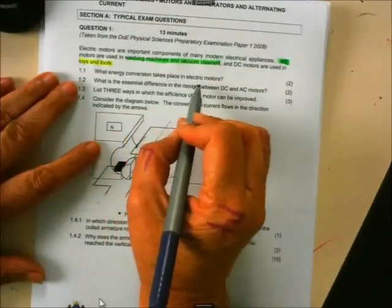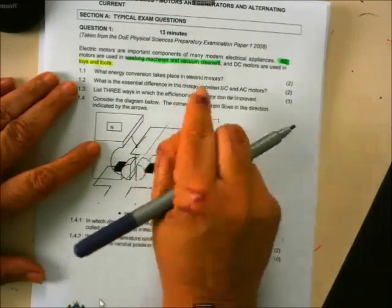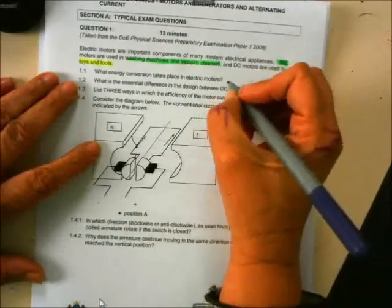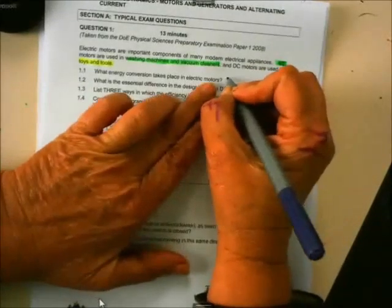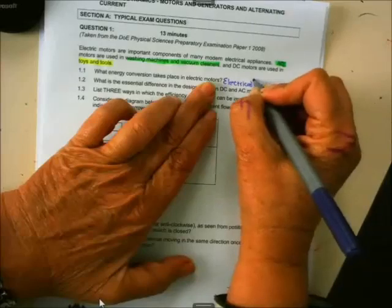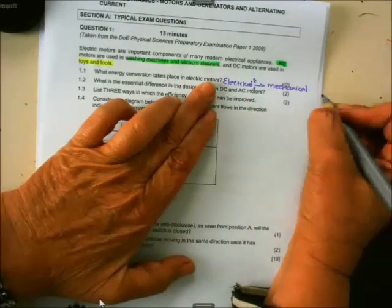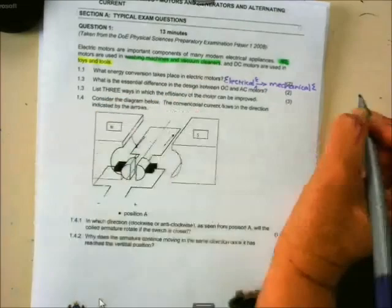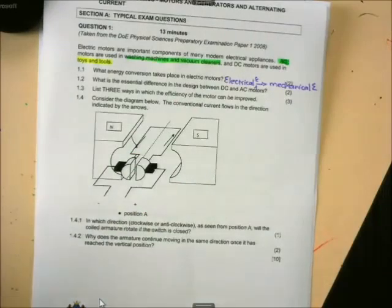Now, what energy conversion takes place in an electric motor? Remember, people, an electric motor converts from electrical, so it's electrical energy, maybe we should put energy with it, to mechanical energy. That's something we learn as well. What does a motor do? Now, they say to us, what is the essential difference in design between DC and AC motors? Now, you can remember what I said just now.